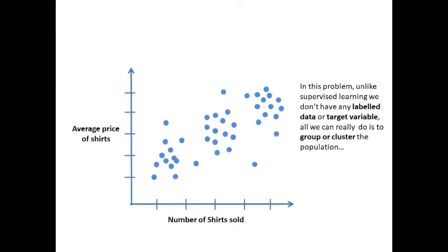In this problem, unlike supervised learning, we don't have any label data or target variable. All we can really do is to group or cluster the population so that people in the same cluster have similar characteristics.